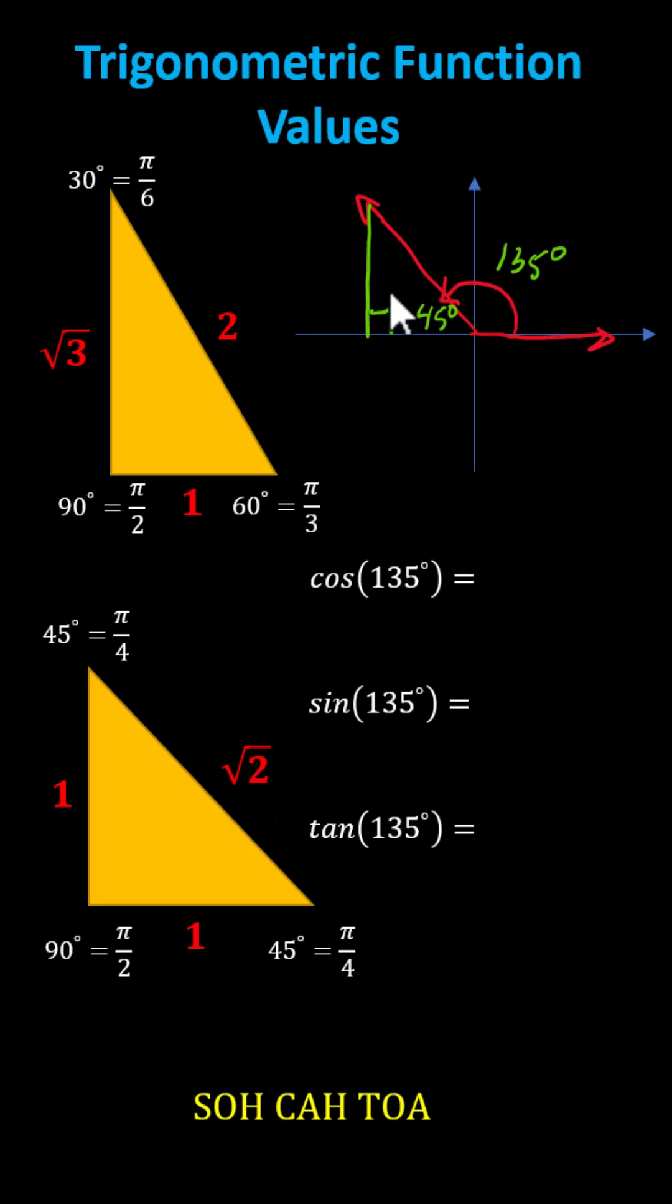However, because we are in the second quadrant where x is negative and y is positive, we label the horizontal leg negative one, the vertical leg positive one, and the hypotenuse square root two.